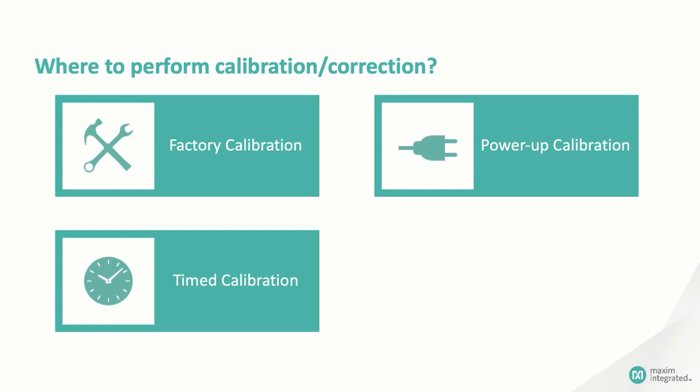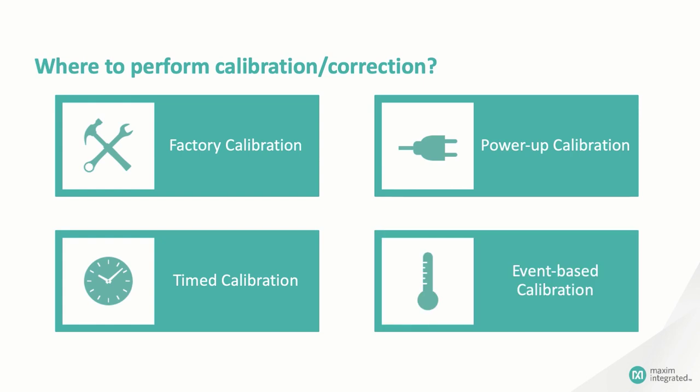Well, if that's the case, maybe you only need to recalibrate the equipment when some event occurs that might actually affect the calibration, like changes in temperature. Maxim builds temperature sensors that can trigger an interrupt at the microcontroller when the temperature falls outside a given range, and you can use this interrupt as a mechanism to recompute the calibration parameters. Hey, whatever you choose, Maxim has you covered.